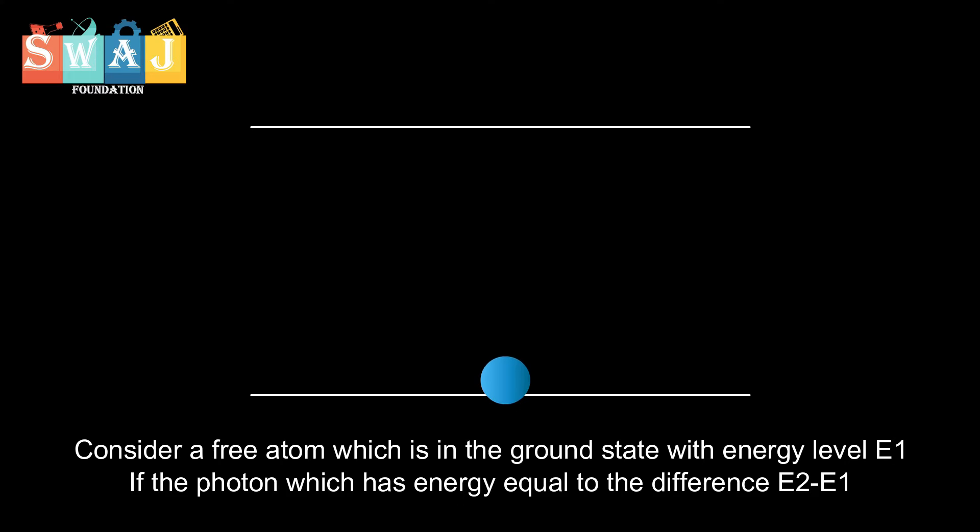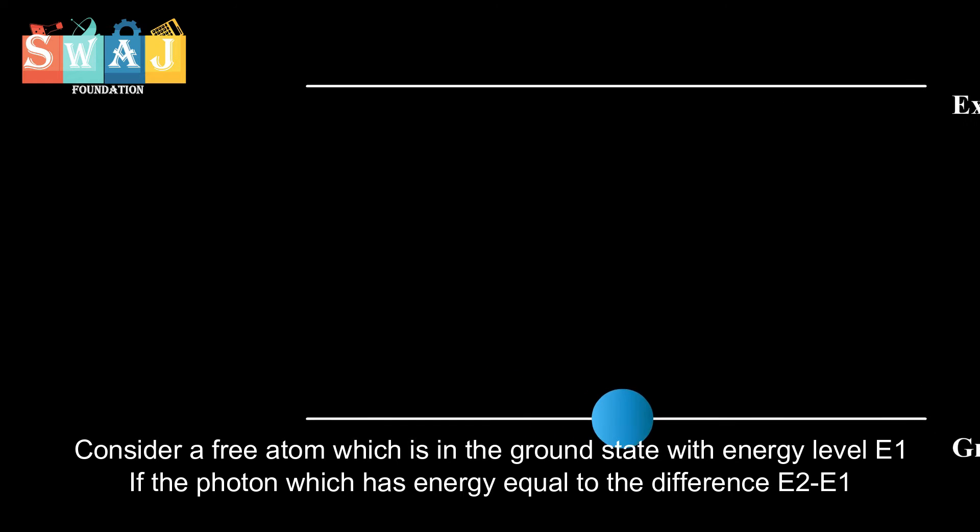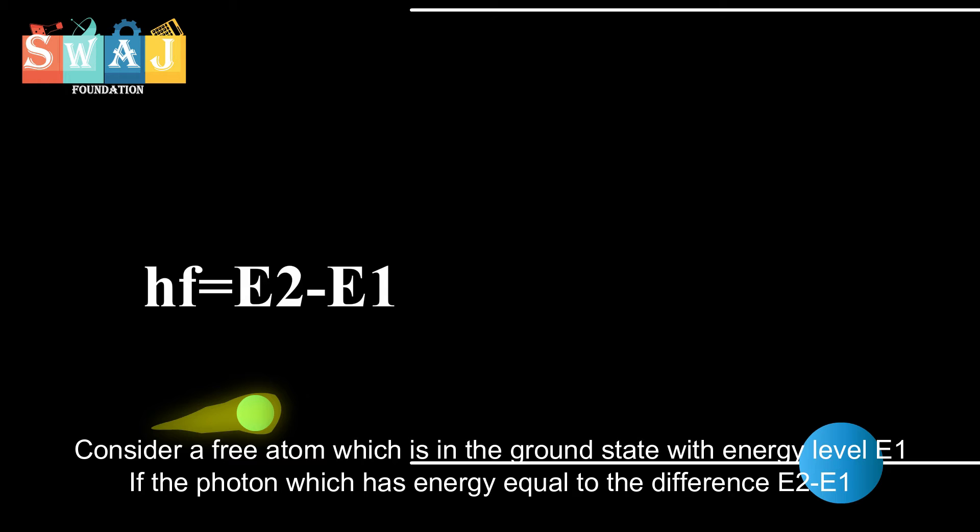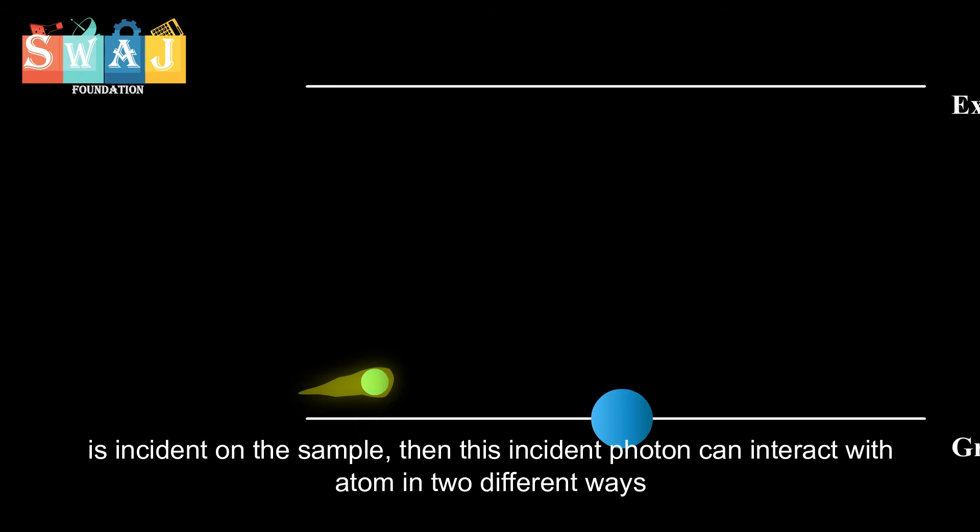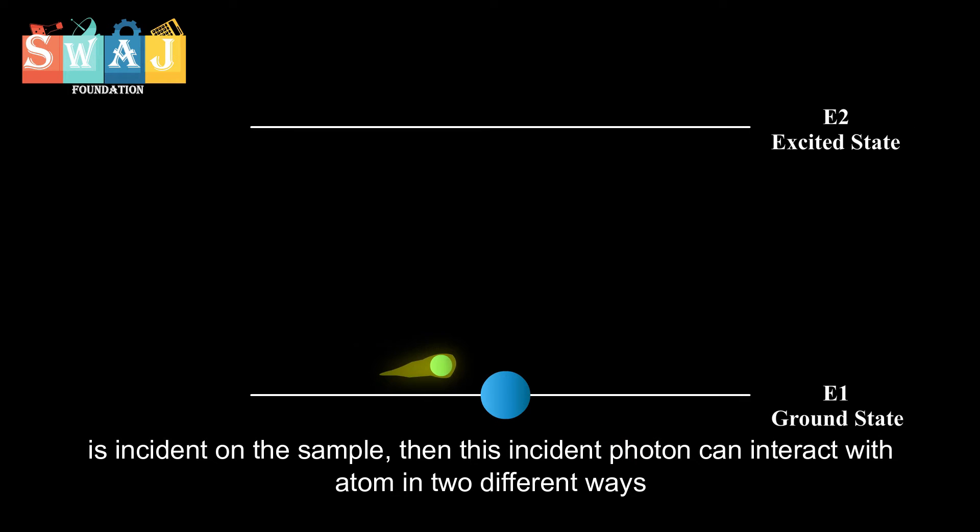Spontaneous and Stimulated Emissions. Consider a free atom which is in the ground state with energy E1. If the photon which has energy equal to the difference E2-E1 is incident on this sample, then this incident photon can interact with the atom in two different ways.